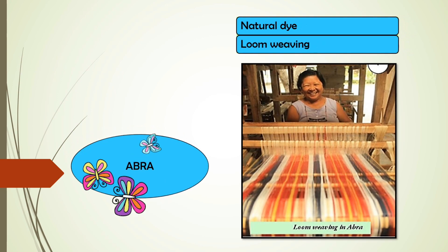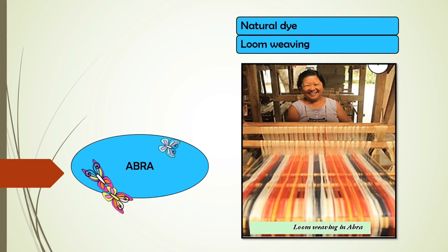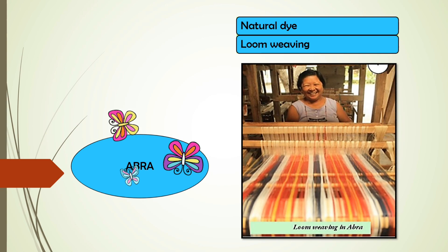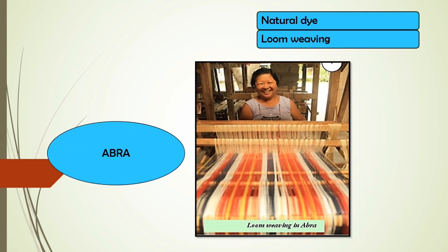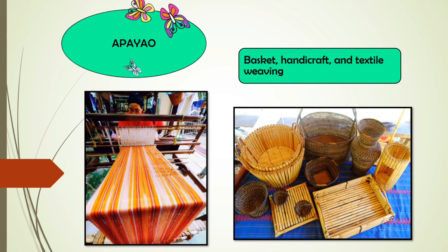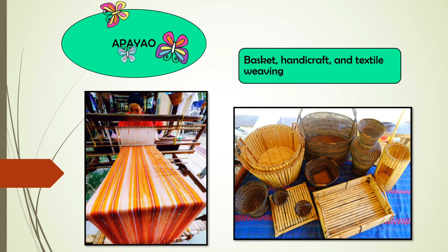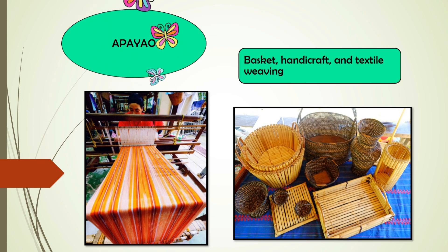The people of Abra use natural dye and still practice loom weaving. The people of Apayaw also have a rich tradition of basket, handicraft, and textile weaving.